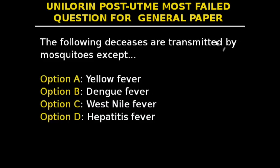This is question 26. The following diseases are transmitted by mosquitoes except — options: yellow fever, dengue fever, West Nile fever, and hepatitis fever. Mosquito-borne illnesses are diseases caused by bacteria, viruses, or parasites transmitted by mosquitoes. Nearly 700 million people get a mosquito-borne illness each year, resulting in over 1 million deaths. Diseases transmitted by mosquitoes include malaria, dengue fever, West Nile virus, yellow fever, Ross River fever, Barmah Forest fever, Zika fever, and filariasis. The odd one out is hepatitis fever — option D.